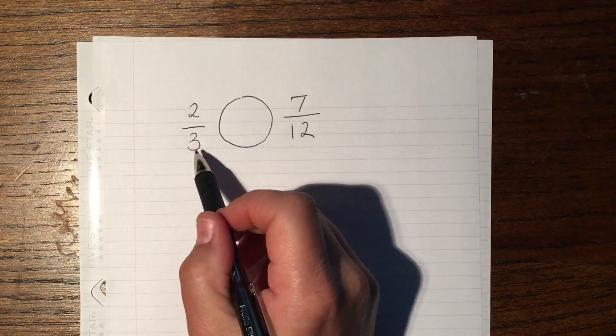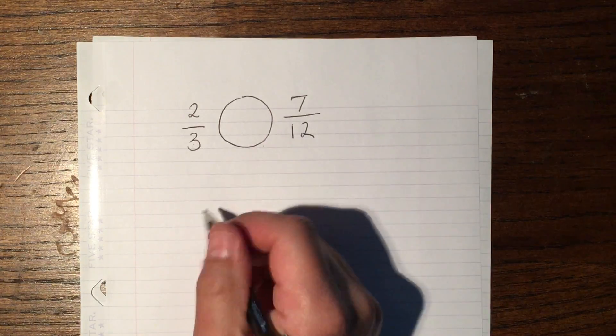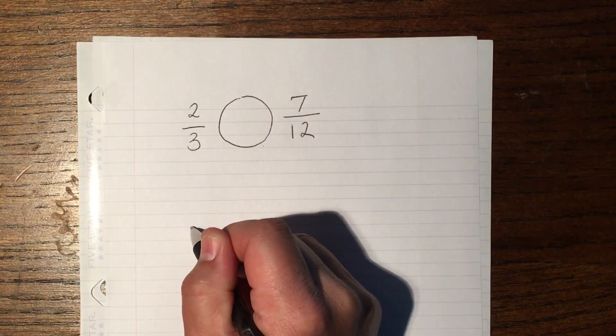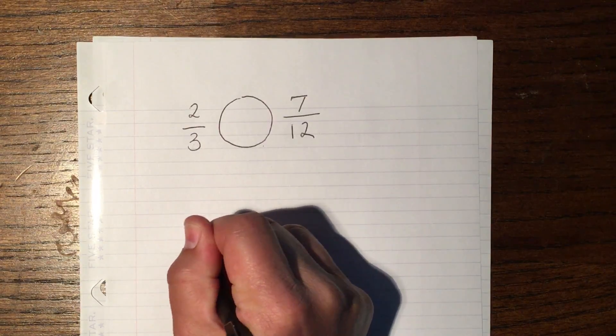To find the common denominator, you do something I call peanuts, where you're going to find the multiples of 3 and 12.